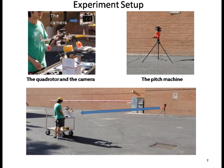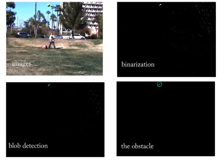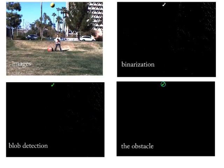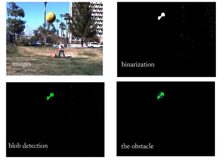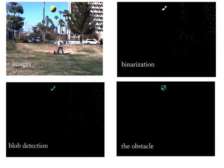In order to simulate high-speed obstacles, we use a pitching machine which propels objects at speeds up to 20 meters per second. Our method for obstacle detection consists of binarization followed by blob detection.